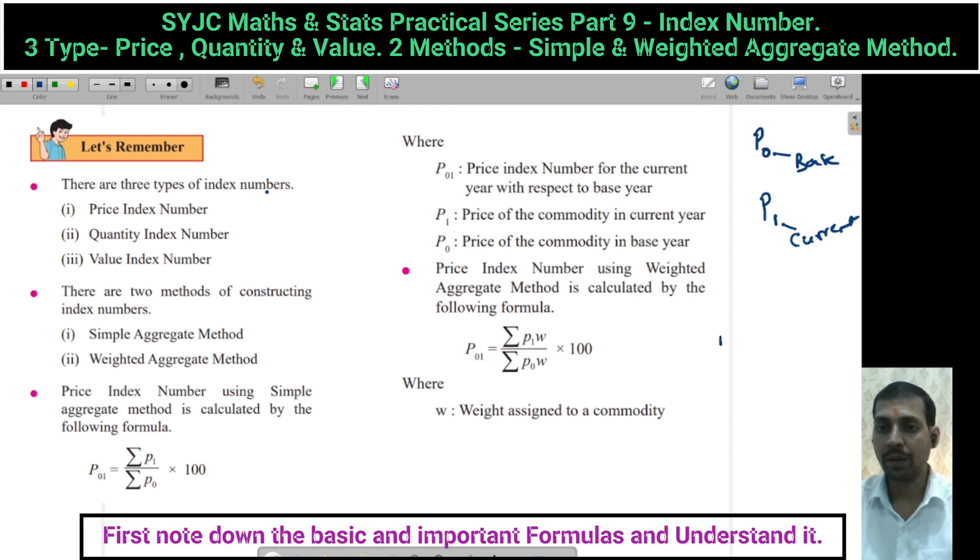For example, if you have 1980 and 1990, the smallest year will be the Base Year and the largest year will be the current year. In 1980, whatever price is given, you will represent as P0. And in 1990, whatever price is given, you will represent as P1.